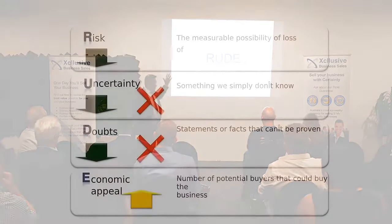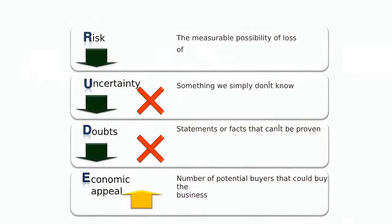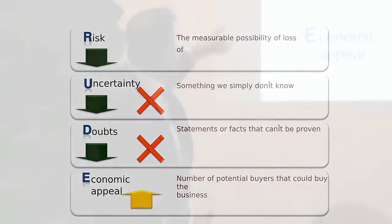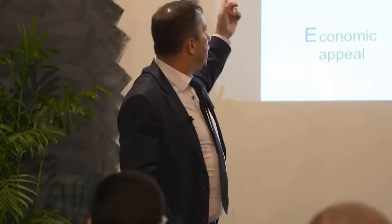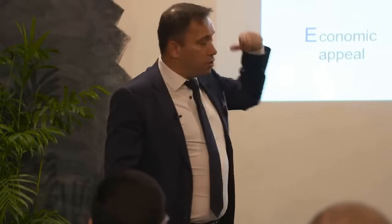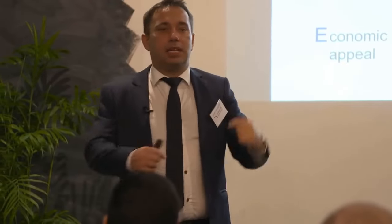So how do you prepare the business? We came up with this acronym — RUDE — just so it's easier to remember. You only need to remember four letters: RUDE stands for Risks, Uncertainty, Doubts, and Economic Appeal. It starts with risk.